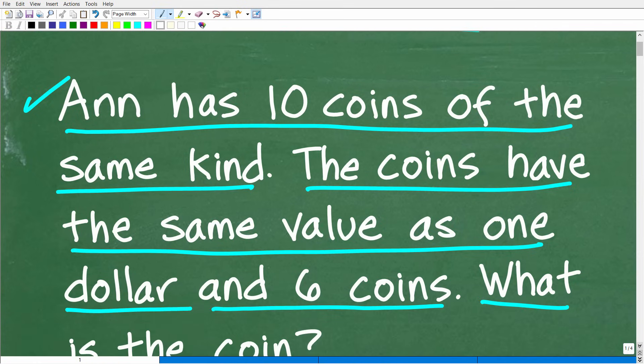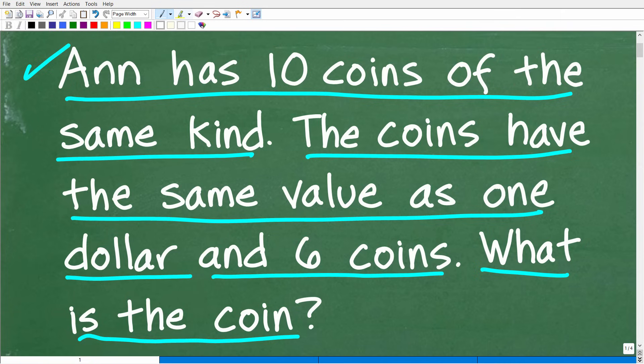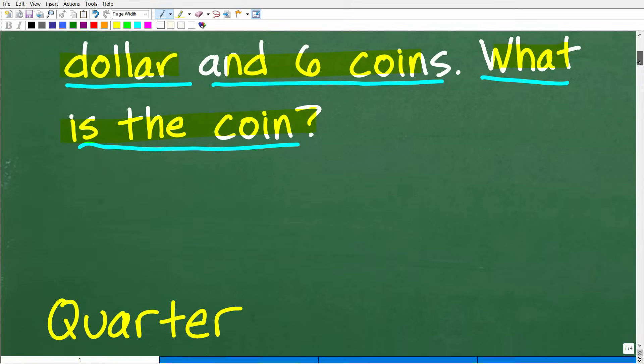Okay, so one more time before we see the answer. The question is, Ann has 10 coins of the same kind. In other words, it's only one type of coin. The coins have the same value as $1 and 6 coins. What is the coin? What type of coin does Ann have? Well, let's go ahead and take a look at the answer.